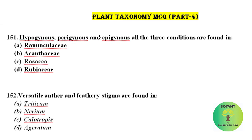Hypogynous, Perigynous and Epigynous — all three conditions are found in family Rosaceae. Some members are having Hypogynous flowers, some are having Perigynous, and some are having Epigynous type of flowers.